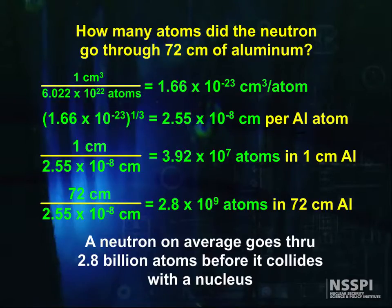A neutron, on average, goes through 2.8 billion atoms before it collides with a nucleus. Now do you believe that atoms are mostly nothing? Why don't we fall through the earth, or why can't we walk through the walls? That has to do with the electrons and the Coulombic forces, which is a story for later. Let's go build the universe, proton by proton.